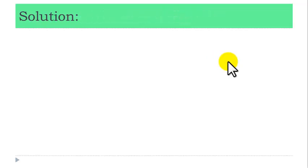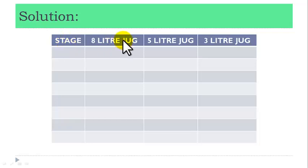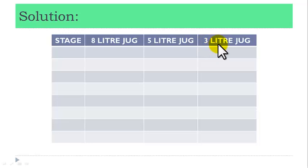Solution. Create a table as shown below. This table consists of four columns. Column 1 is for stage. Column 2 is for the 8-liter jug. Column 3 is for the 5-liter jug. Column 4 is for the 3-liter jug.